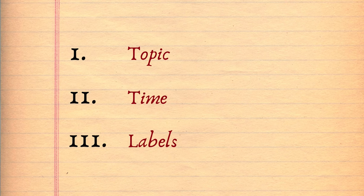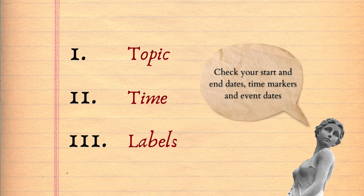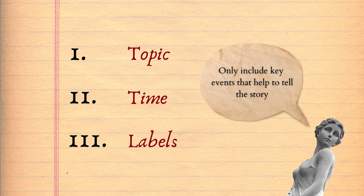To wrap up, there are three key things that make a really good timeline. The first is having one clear topic that's about one place, one society, or one thing. The second is the way that you use time — set your start and end date well, make sure your time markers are spaced evenly, and make sure you date your events. The third is only showing key events and excluding those minor details that don't really matter to the story as much.